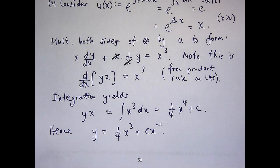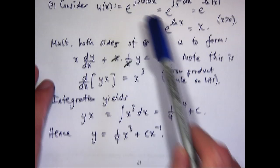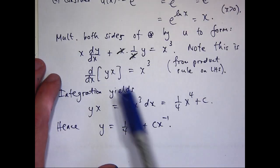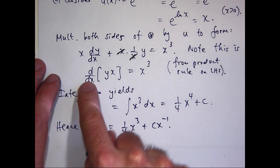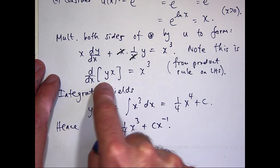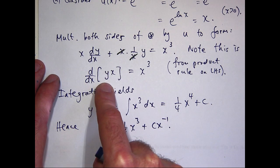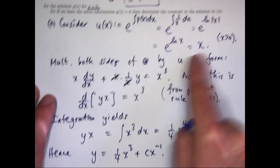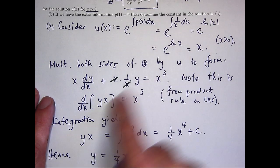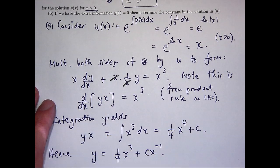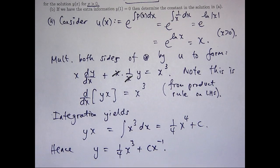In general, multiplying both sides of your differential equation by the integrating factor will always give you the derivative of the product of y and the integrating factor on the left-hand side. You can see how the integrating factor always multiplies through with y — that will always work in general.